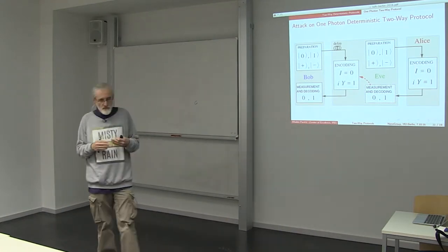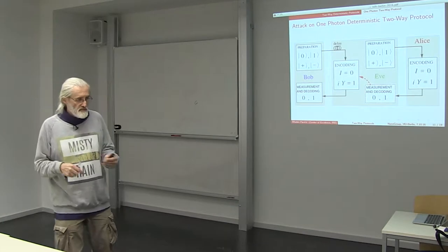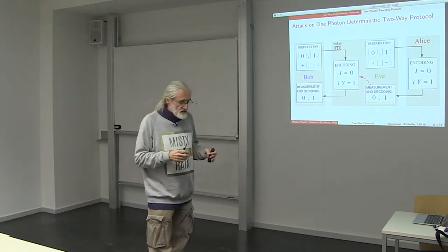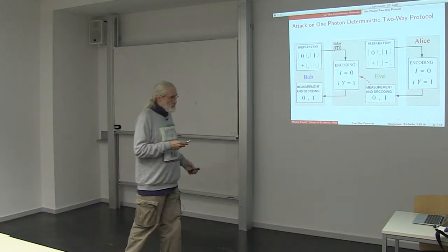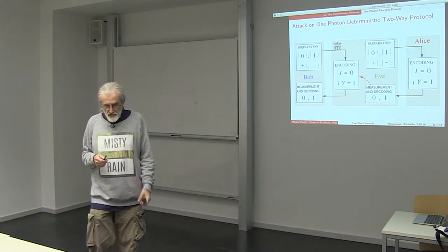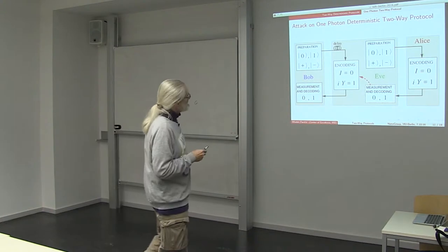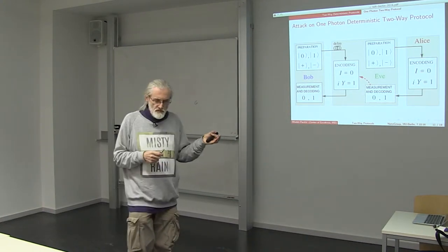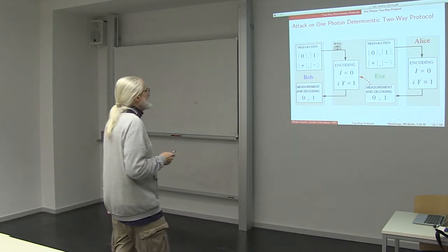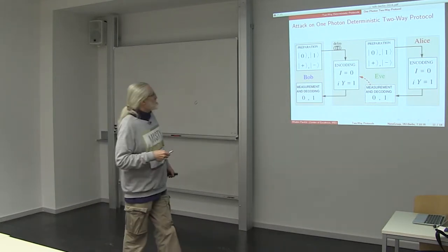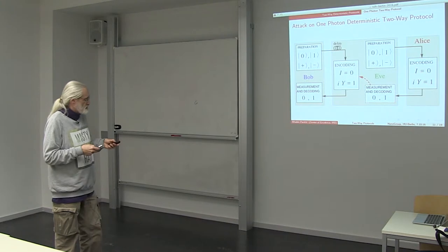Again, Eve doesn't introduce any disturbance whatsoever in the message mode and knows all the messages that Alice sent to Bob. Bob receives also all the messages and there are no losses ideally in this transmission.